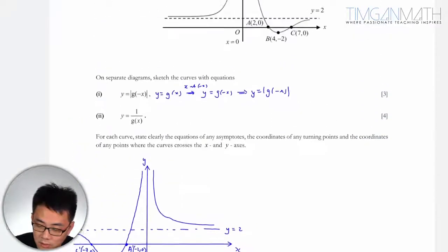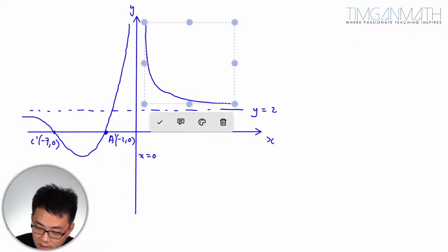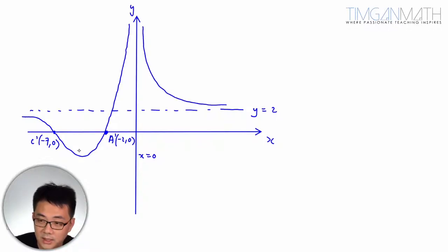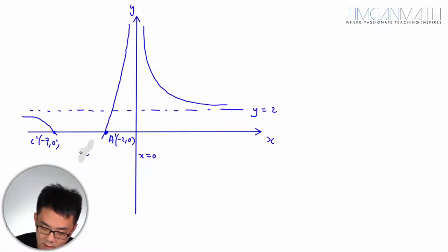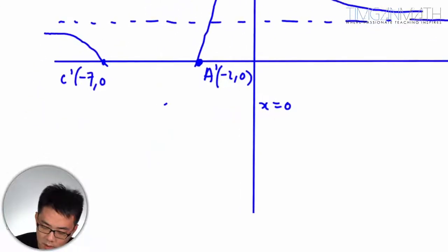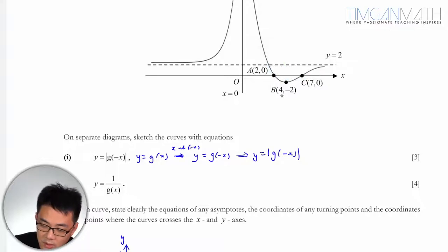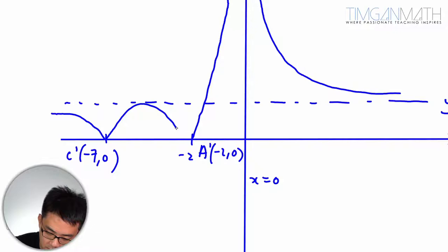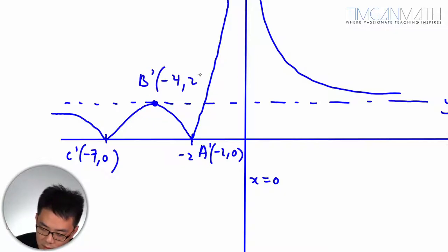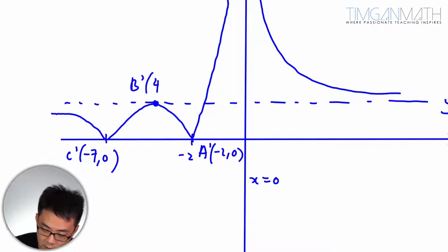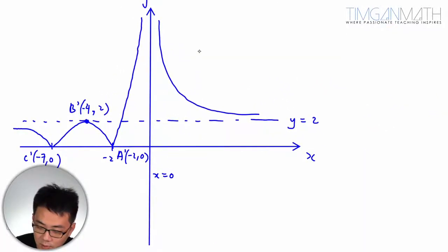After reflecting about the y-axis, we then apply the modulus — reflecting the negative parts upward. Point B' is at (-4, 2), so it touches the horizontal asymptote. So this gives us the completed sketch of y equals |g(-x)|.